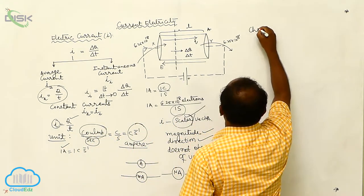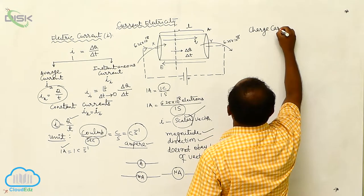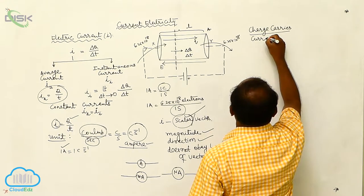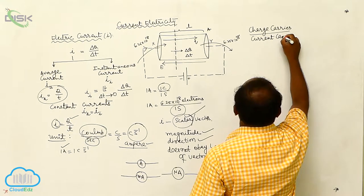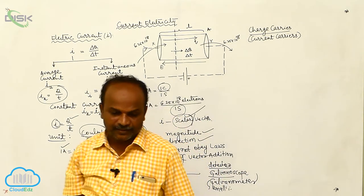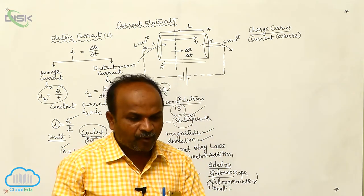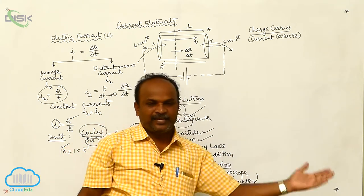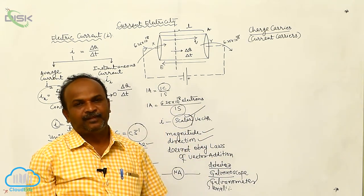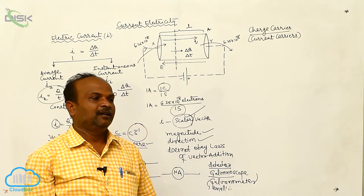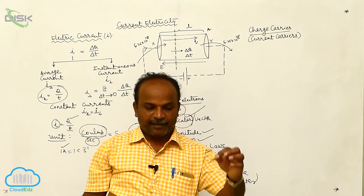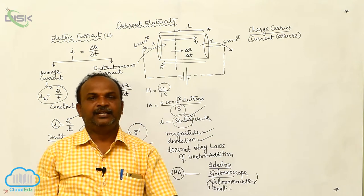The charge carriers are also called current carriers. The flow of charges perpendicular to the cross-sectional area in one second is called current. The net charge passing through a conductor perpendicular to the cross-sectional area in one second is called current.